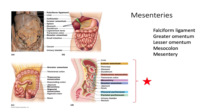The mesentery anchors the small intestine to the posterior wall. The mesocolon anchors the large intestine to the posterior body wall — you can see both of those here. The greater omentum is attached to the transverse colon and is a flap of material that hangs down over the intestines to protect them. The lesser omentum connects the stomach with the liver and helps to anchor the stomach. The falciform ligament anchors the liver to the posterior body wall. So all the different parts of the digestive system are anchored to that posterior body wall in one way or another.